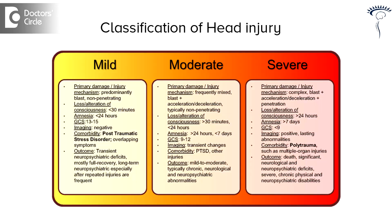Now, coming to the first one — the severity of head injury — we can classify head injury into three types according to this classification. Number one is mild head injury. Number two is moderate head injury. Number three is severe head injury.